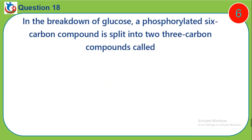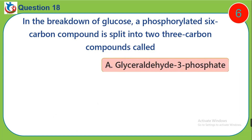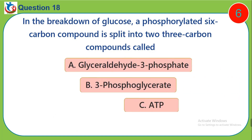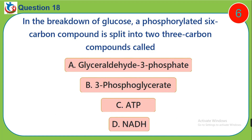Question 18. In the breakdown of glucose, a phosphorylated six-carbon compound is split into two three-carbon compounds called: A. Glyceraldehyde-3-phosphate. B. 3-phosphoglycerate. C. ATP. D. NADH.